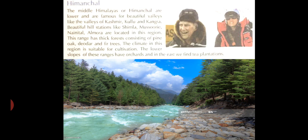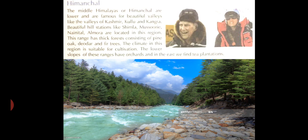This range has thick forests consisting of pine, oak, deodar and fir trees. The climate in this region is suitable for cultivation. The lower slopes of this range have orchards, and in the east we find tea plantations.